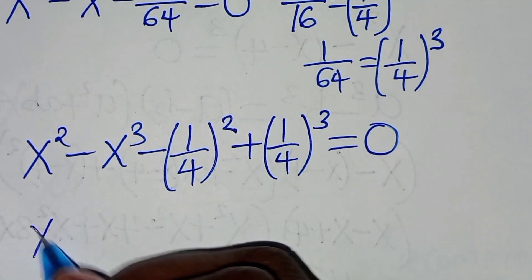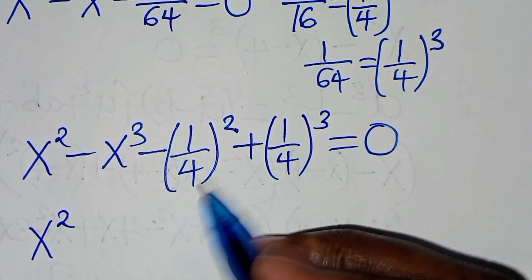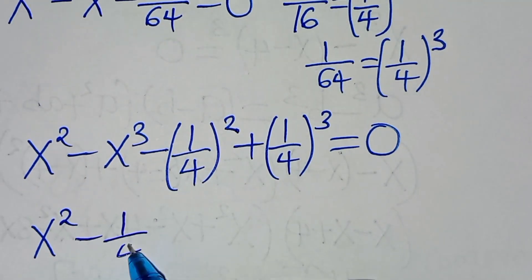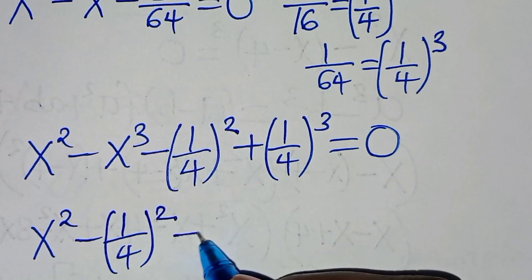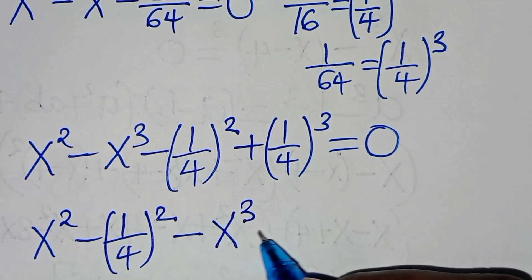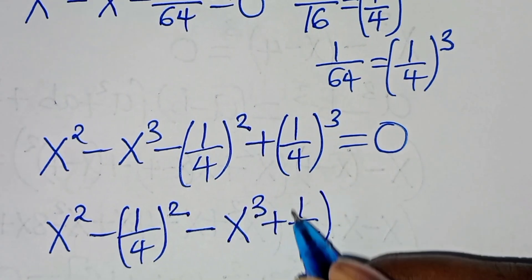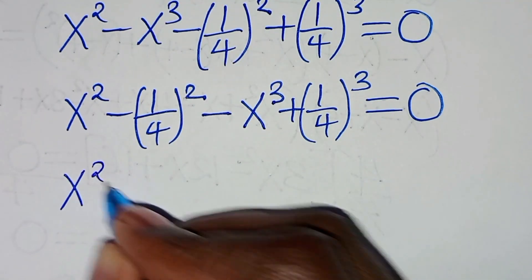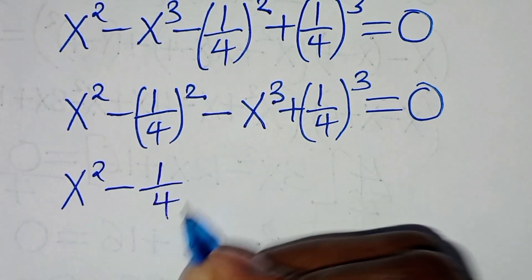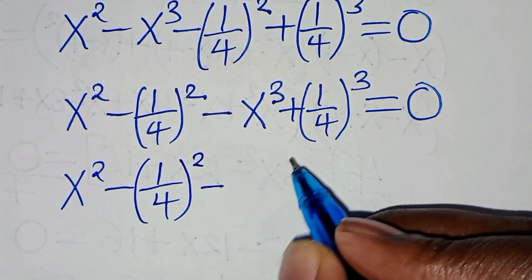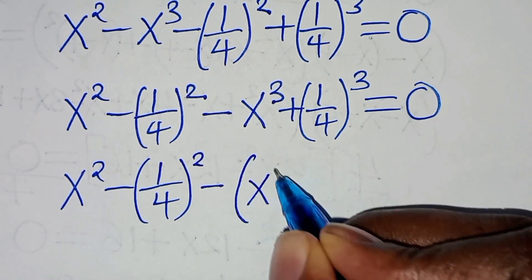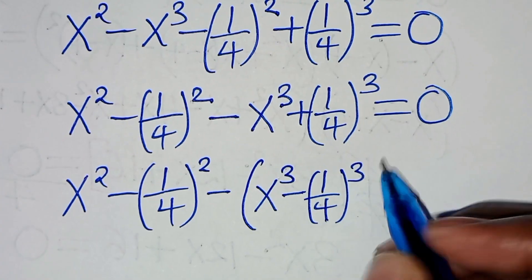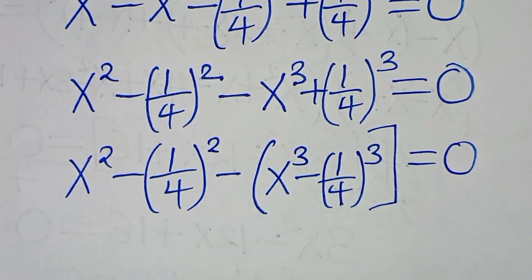So, we can regroup this as x squared minus (1 over 4) squared, then subtract x cubed minus (1 over 4) cubed, this is equal to 0.